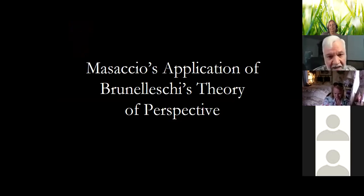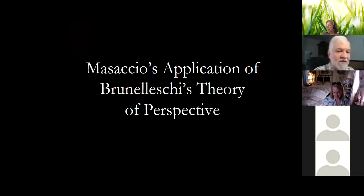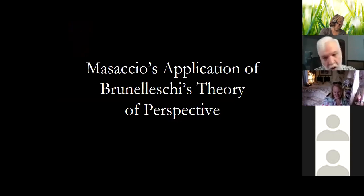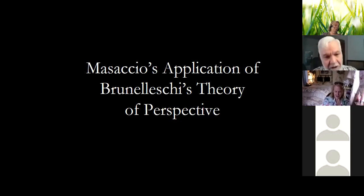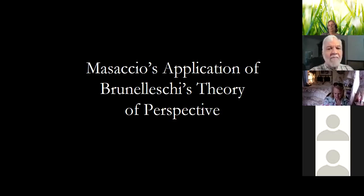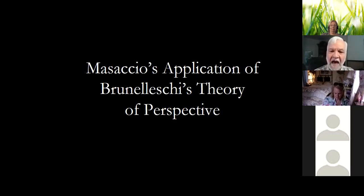However, the artist who actually did the very first painting that has survived based on Brunelleschi's theory was his buddy Masaccio. Masaccio is one of those nicknames that a lot of Renaissance artists have — Maso is the nickname for Tommaso, for Thomas, and Masaccio means 'Big Tom.' He was a friend of Brunelleschi's; they had gone together to Rome. Imagine a time when two great geniuses are friends and talking to each other — that's a great thing.